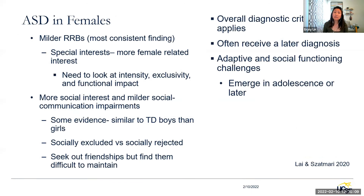In females — and research in this area is continuing to grow — females diagnosed later have milder presentations overall. They have milder restrictive repetitive behaviors and milder social communication impairments. They are more similar to typically developing boys and girls. What you see is social exclusion rather than rejection — they seem to seek out friendships but find it difficult to maintain them. Females often receive a diagnosis later, especially as social skills advance in their peers and they are left behind.